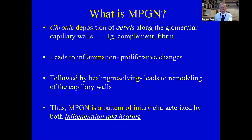Let's start with what MPGN is. Like most glomerular disease, most glomerulonephritis are what I like to think of as 'debris diseases' — things get deposited in the kidney, in the glomerular capillary walls, and they lead to inflammation. It could be immunoglobulins, complement, fibrin, or other things. Stuff shows up in the glomerulus, you get inflammation, the glomerulus tries to respond with healing, and then there's a resolving phase — often manifested by double contours.